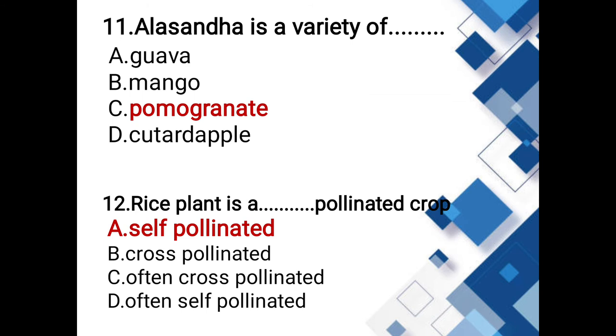Alasandha is a variety of which fruit? Options: Goa, mango, pomegranate, custard apple. The answer is pomegranate. Alasandha is a variety of pomegranate (danimma).